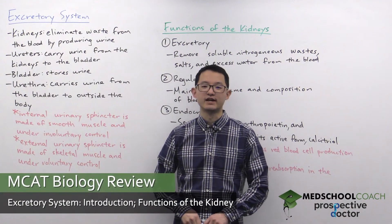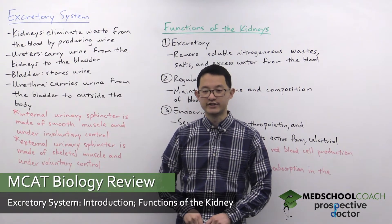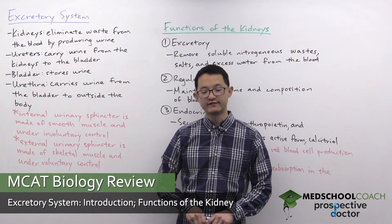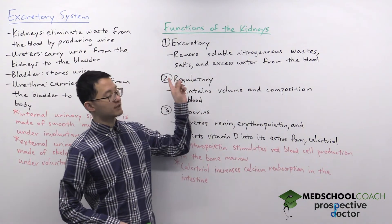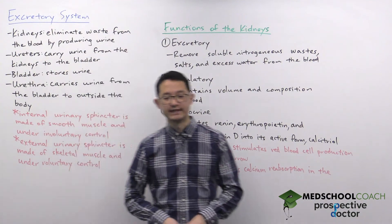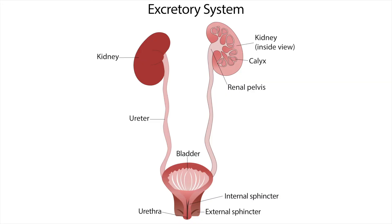In the next few videos we're going to cover the excretory system. This video is going to introduce the different structures of the excretory system and also discuss the functions of the kidneys. In this diagram you can see there are a number of structures in the excretory system. At the top we have the kidneys, which have the important role of eliminating waste from the blood by producing urine.